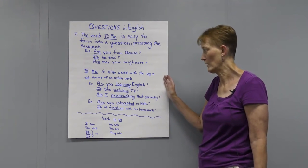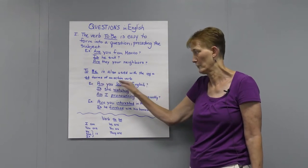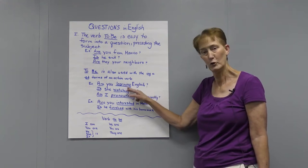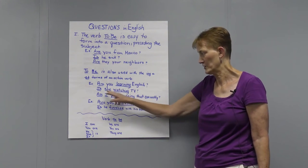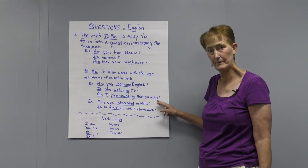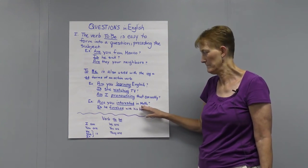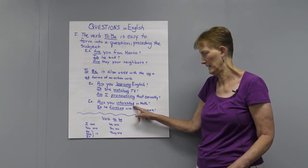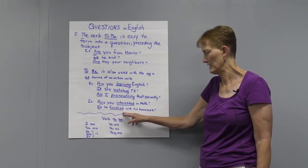The verb to be is also used in questions that have the -ing form of a verb or the -ed form of an action verb. For example: Are you learning English? Learn plus the -ing is the progressive form of the verb. Is she watching TV? Am I pronouncing that correctly? Are you interested in math? Here 'interest' with the -ed added is a participle, and you have to have a helping verb with it. That is where you use a form of the verb to be. Is he finished with his homework?